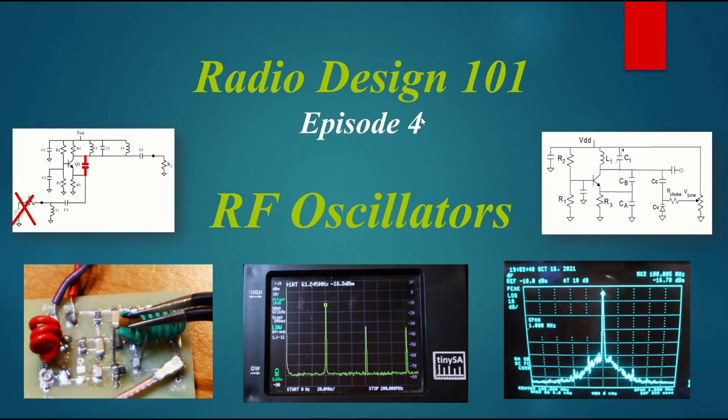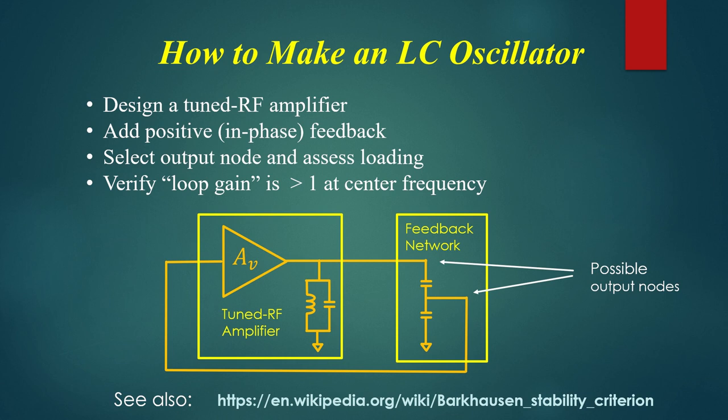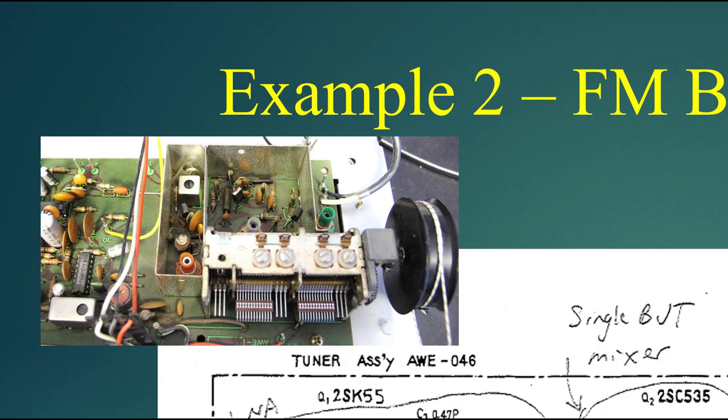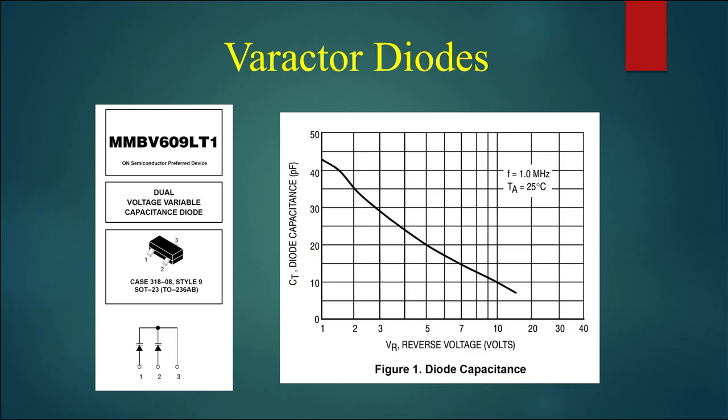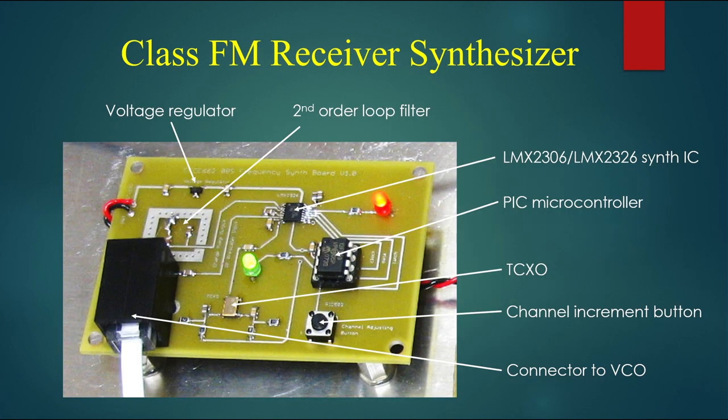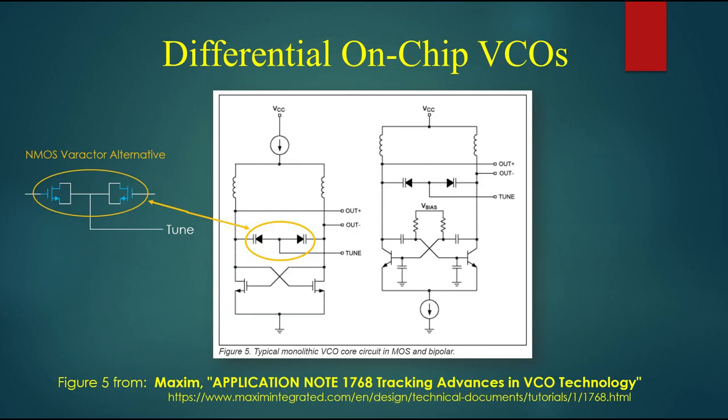Welcome to episode 4 in our Radio Design 101 series. Today we're going to talk about RF oscillators, how they're made by applying positive feedback to a radio frequency amplifier, how they can be tuned either mechanically with a variable capacitor or electronically with a varactor diode, and we'll finish up with a little bit on frequency synthesizers and how modern oscillators are actually created.